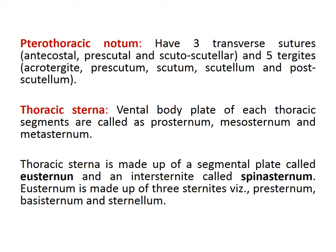The pre-thoracic notum has three transverse features: antecostal, prescutal and the scutoscutellar. The sclerites are: acrotergal, pre-scutum, scutum, scutellum and post-scutellum. The thoracic sternum — the ventral body plate at each thoracic segment — is called pro-sternum, meso-sternum and metasternum.